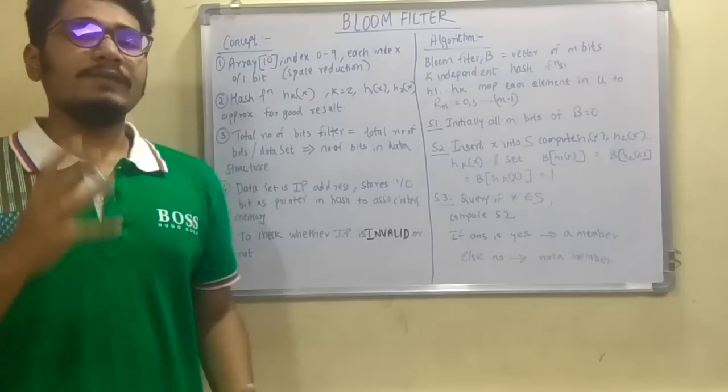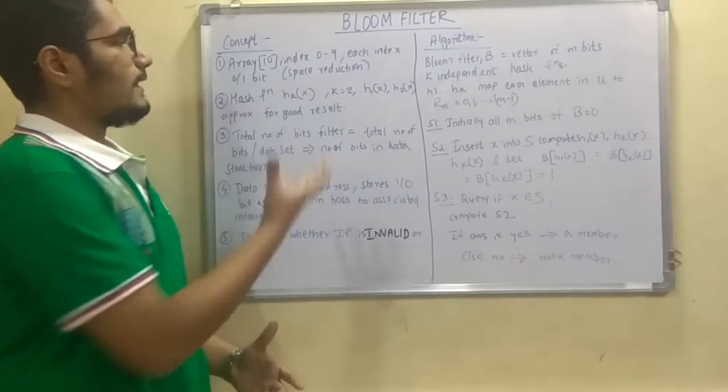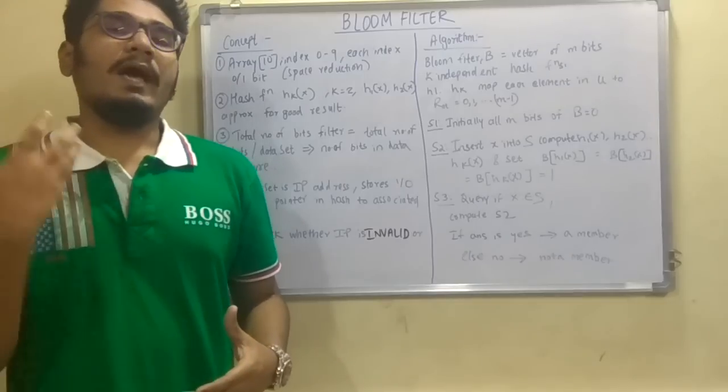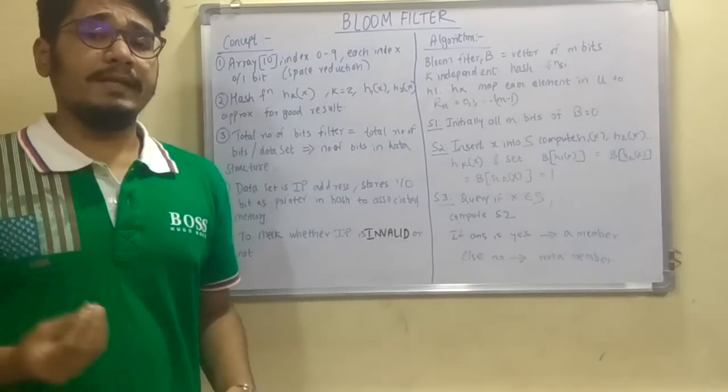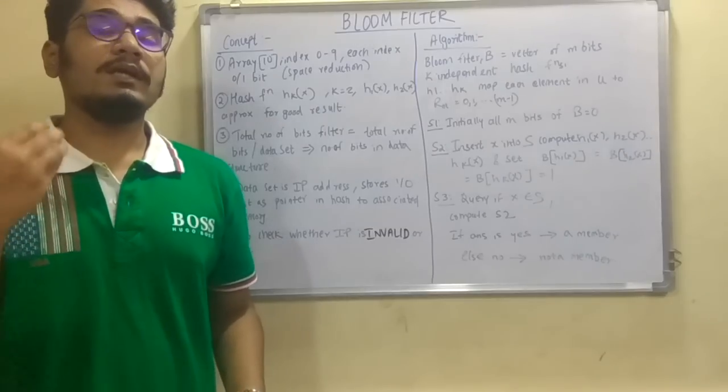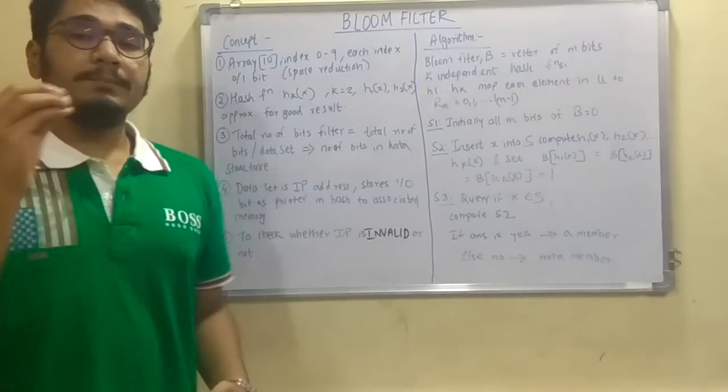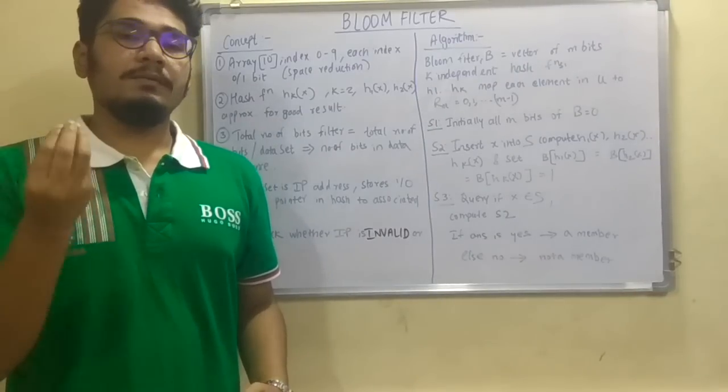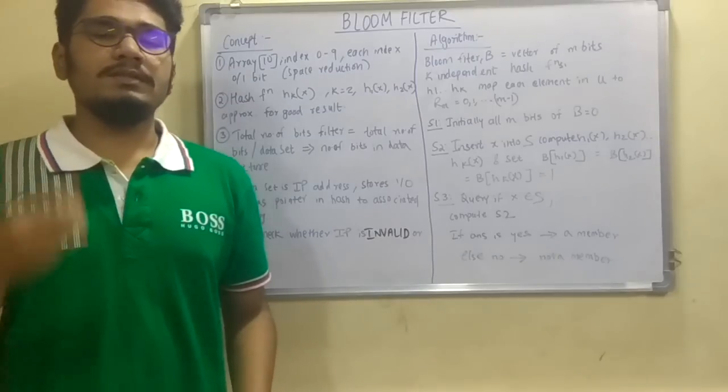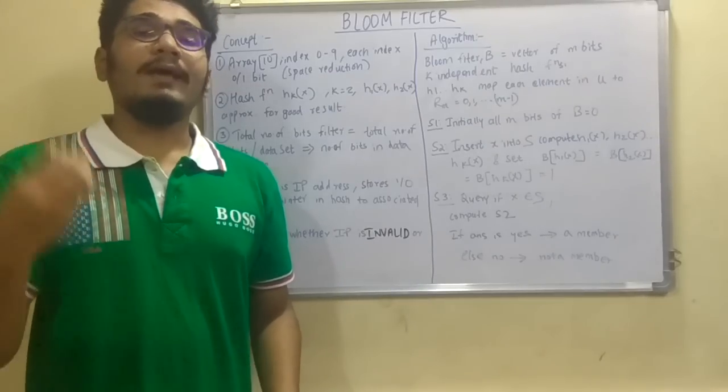There will be an array of 10 elements and this array will be indexed from 0 to 9. On each index, that is array[0], array[1], array[2], likewise we keep a bit that is 0 or 1. Now this bit is basically used for the space reduction. Instead of putting all the ASCII values, in order to reduce the overhead we make use of a simple bit that is 0 or 1.